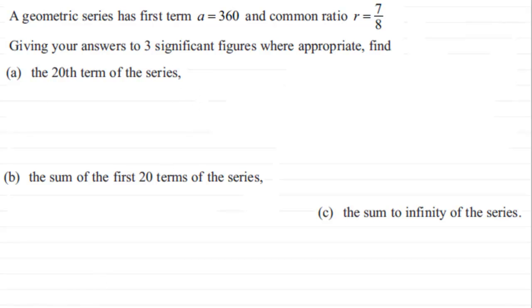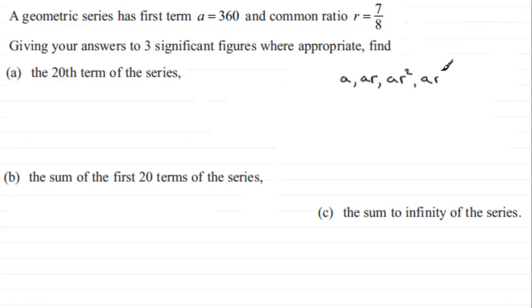I'm assuming you're familiar with the geometric series — if not, check out more tutorials on my website, examsolutions.net. Briefly, to find the twentieth term: in general the series is first term a, next term you multiply by the common ratio R to get AR, then AR squared, and so on. The nth term is always AR to the power n minus one.